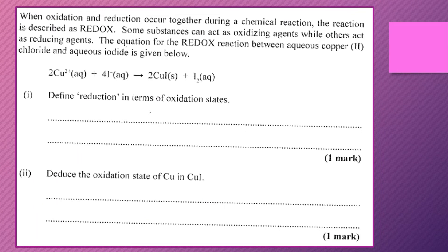So this is the question that we're looking at. When oxidation and reduction occur together during a chemical reaction, of course we know that's described as a redox reaction. Some substances can act as oxidizing agents or as reducing agents. And the equation we're looking at here shows a redox reaction between aqueous copper(II) chloride and aqueous iodide.